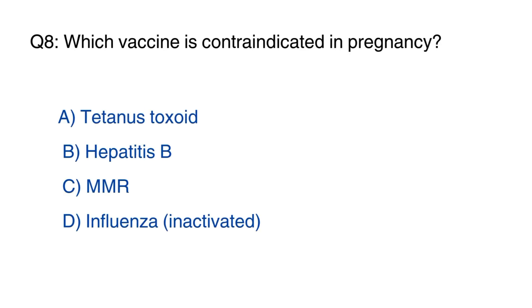Question number 8: Which vaccine is contraindicated in pregnancy? The right option is option C, MMR.